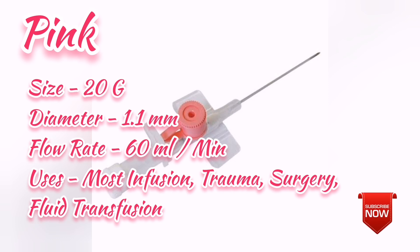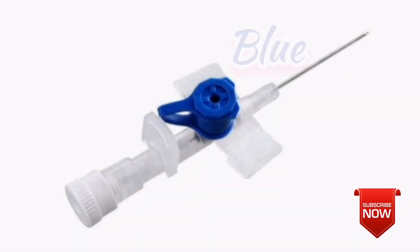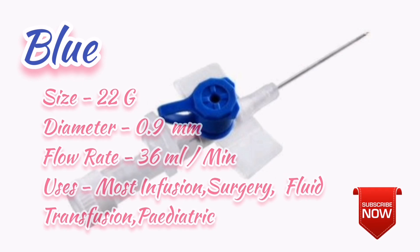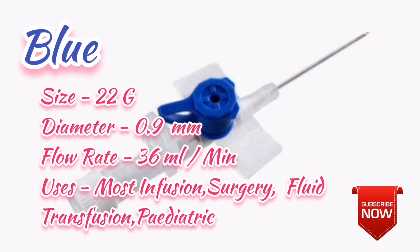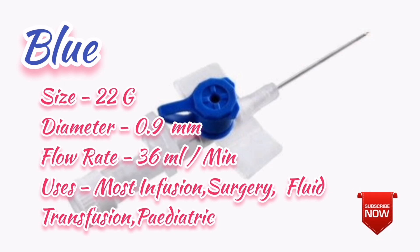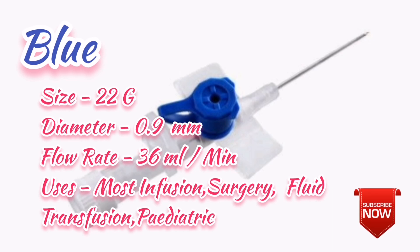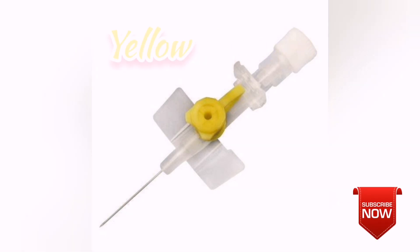Now, if you are using a drip in hospital, you can use a different color. The color is blue. The size is 22G, diameter is 0.9 mm, and flow rate is 36 ml per minute. If you use this, you can use it for IV infusion or drip, and it can be used as a pediatric cannula.